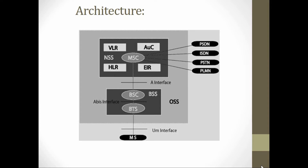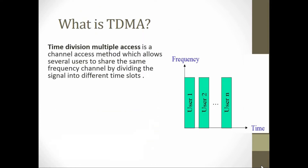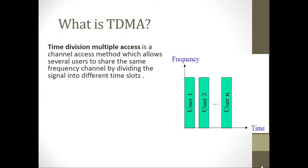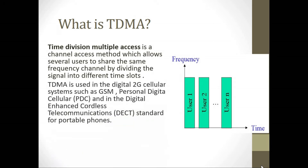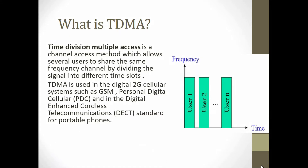Next, what is TDMA? TDMA means Time Division Multiple Access — a channel access method which allows several users to share the same frequency channel by dividing the signal into different time slots. In the graphical representation, the horizontal axis represents time and the vertical axis represents frequency. Users 1, 2, and 3 share the same frequency. TDMA is used in 2G digital cellular systems such as GSM, PDC, and DECT portable phones.